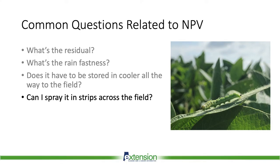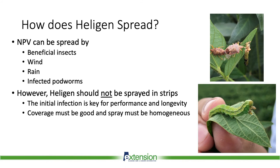Can I spray this in strips across the field? The virus really can spread a long way — either on its own or with help from beneficial insects, wind, rain, or infected podworms can move it up and down the plant canopy, and it can spread miles without spraying. However, those first 24 hours are critical for establishing the virus and getting prolonged activity weeks after the spray. In order to do that, we need a good homogenous application. The virus can take days or weeks to move effectively, so spraying strips gives up a lot of control and initial infection. It's very important that we spray the entire field.